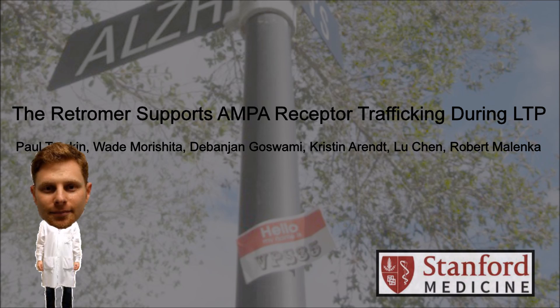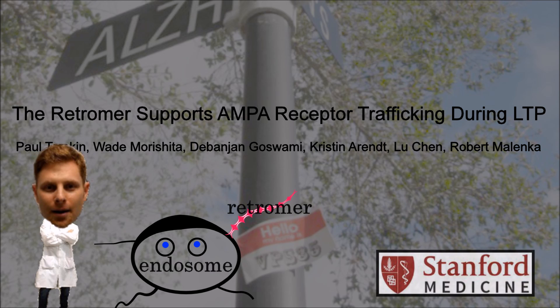In this paper, we manipulate VPS35, a key component of the Retromer Endosomal Sorting Complex, which has been found to malfunction in cases of both Parkinson's and Alzheimer's disease.